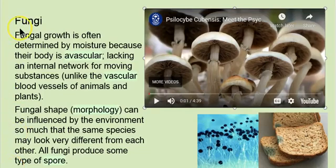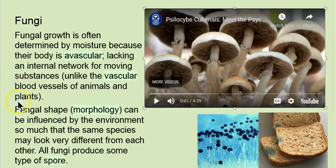When I think of fungi, I think of moisture, because these guys are avascular — that means they don't have an internal network for moving substances like we have blood vessels. Plants have vascular tissue as well, and one of the problems of being avascular is they kind of have to get their moisture straight into the cells, so that limits them a little bit.